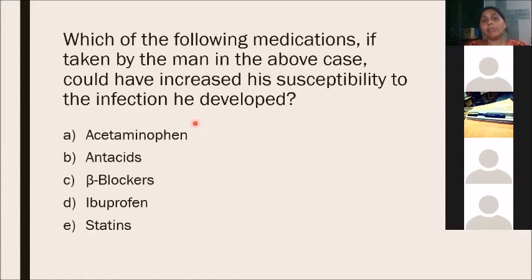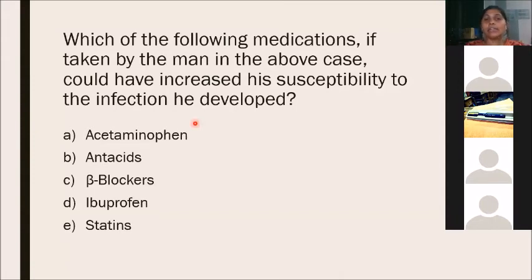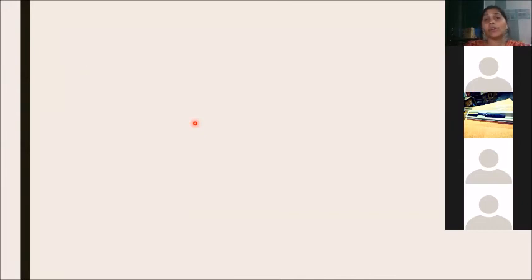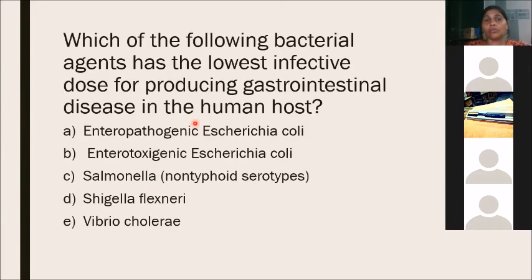Which of the following medications, if taken by the man in this case, could have increased his susceptibility to the infection? Options: acetaminophen, antacid, beta-blocker, ibuprofen, or statin. The answer is antacids. The acidity of the stomach is a very effective natural protective mechanism. Because of this, we are normally protected against Vibrio, Salmonella, Campylobacter, and many other bacteria.